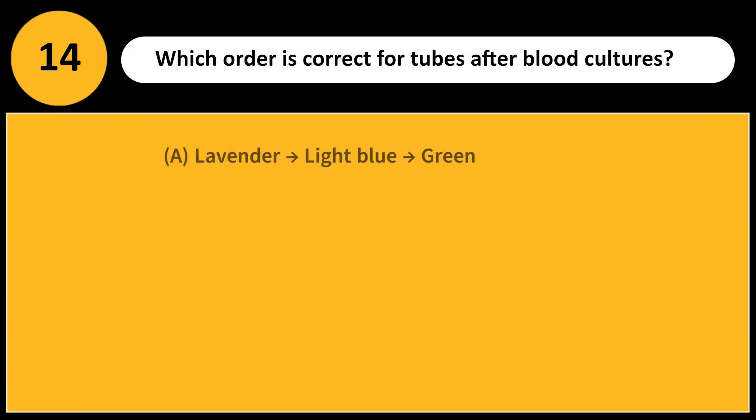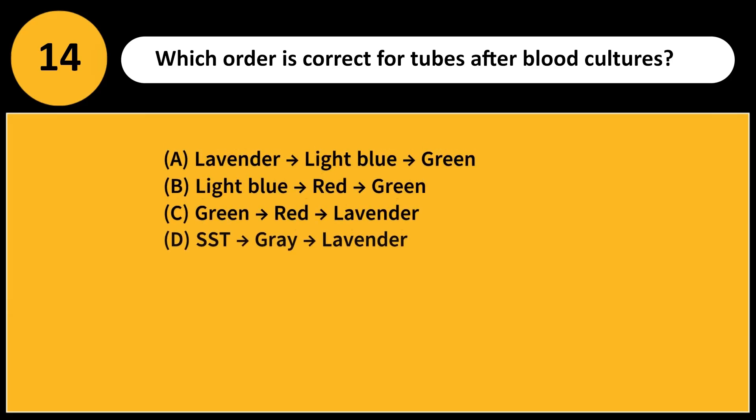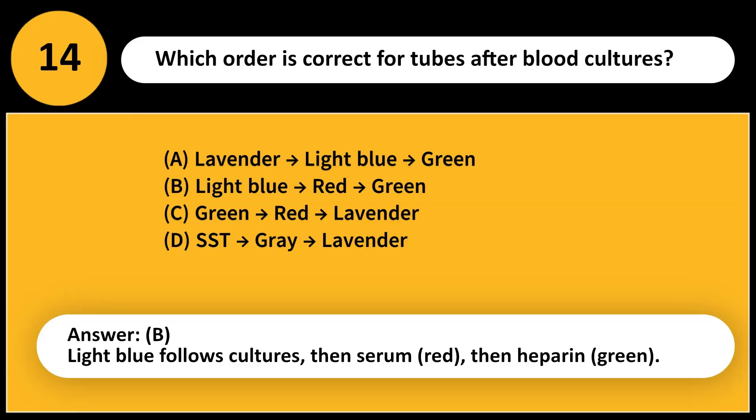Which order is correct for tubes after blood cultures? A. Lavender, light blue, green. B. Light blue, red, green. C. Green, red, lavender. D. SST, gray, lavender. Answer: B. Light blue follows cultures, then serum red, then heparin green.